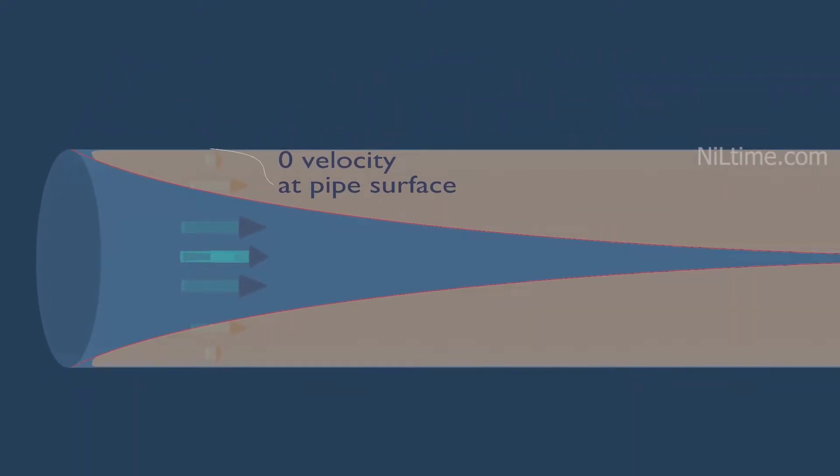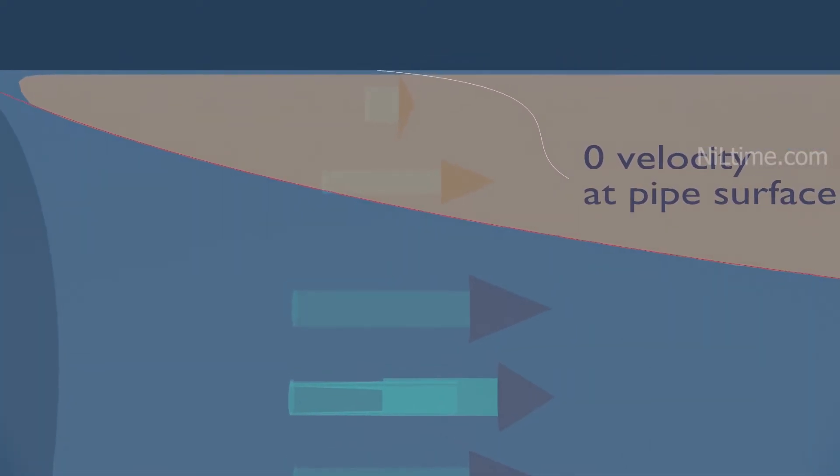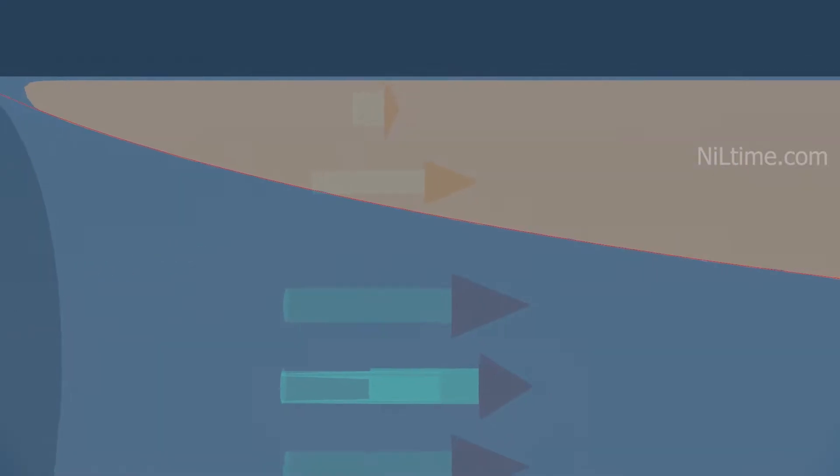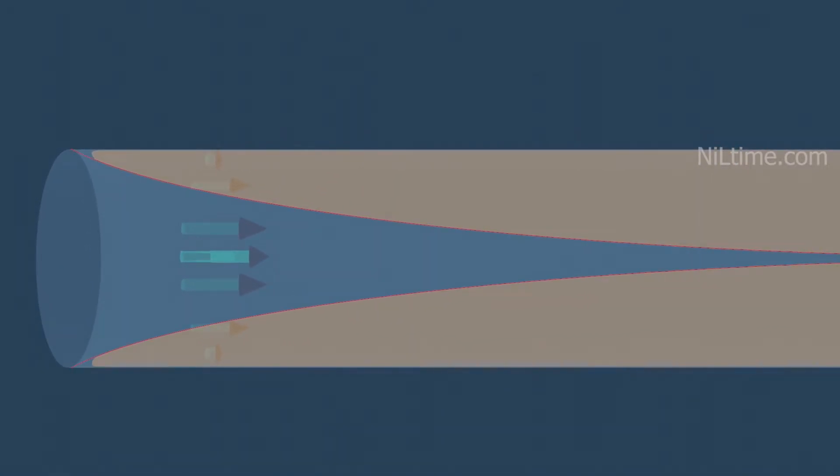The layer that sticks to the surface slows the adjacent fluid layer because of viscous forces between the fluid layers, which slows the next layer, and so on. So, the flow region adjacent to the wall, in which the viscous effects are significant, is called the boundary layer.